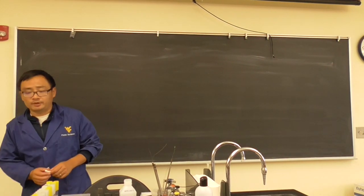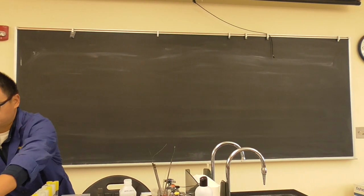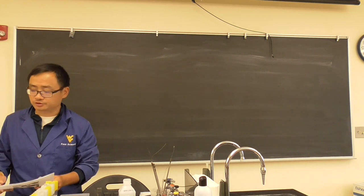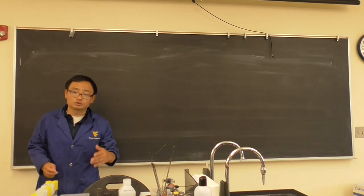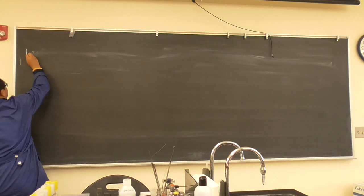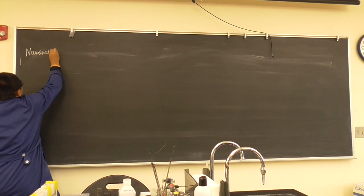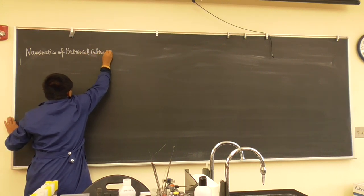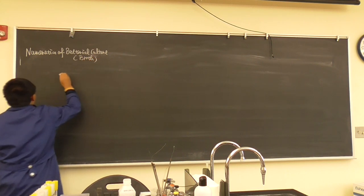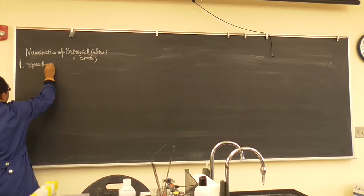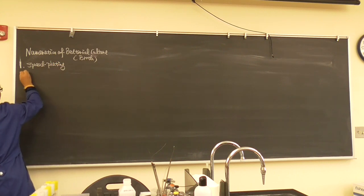This week we'll talk about enumeration of bacteria. You'll see fact sheets covering pour plating and spread plating, and we'll also have a dilution quiz sent out later. We want to see how many bacteria are on the plates. There are two methods we can use in the lab for enumeration of bacteria culture: spread plating and pour plating.